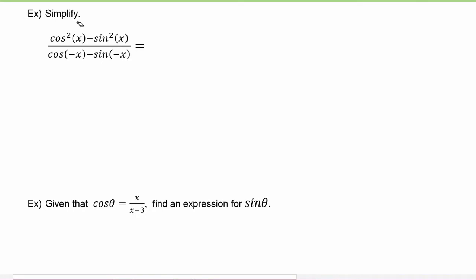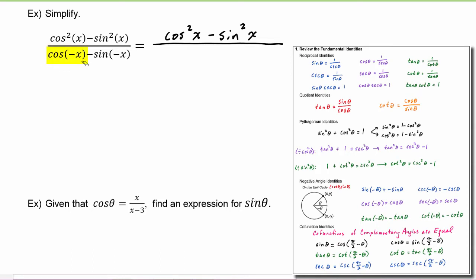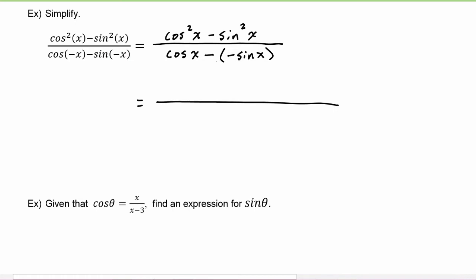In this example we have to simplify cosine squared of x minus sine squared of x, over cosine of negative x minus sine of negative x. First, let's work on that denominator. We know that cosine of negative x — one of our negative angle identities tells us that is just cosine of x. Minus sine of negative x is negative sine of x. So this denominator becomes cosine of x plus sine of x.